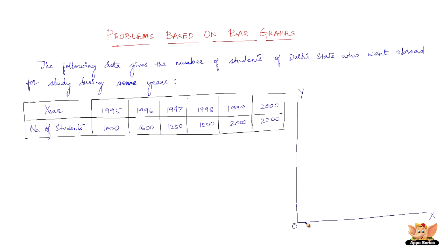Now along OX mark years and along OY mark the number of students. So let us mark the years along the X axis. We've got 1, 2, 3, 4, 5, 6 years. So let us mark them here now: 1995, 1996, 1997, 1998, 1999 and 2000. So we've got the years marked.